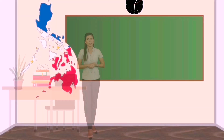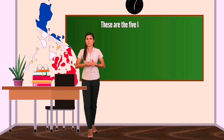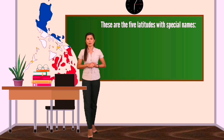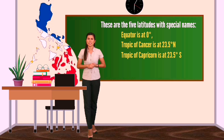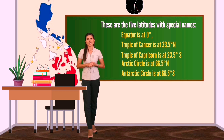Again, the five latitudes with special names are: the equator, the Tropic of Cancer, the Tropic of Capricorn, the Arctic Circle, and the Antarctic Circle.